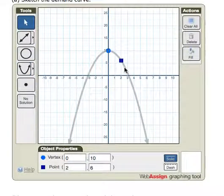And when I do that now, I have a parabola that you can see crosses the y-axis at (0, 10), and the second point is (2, 6). And then if everything looks good, you can submit that answer.